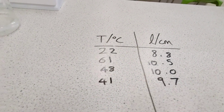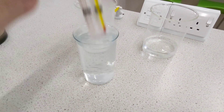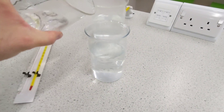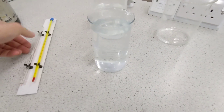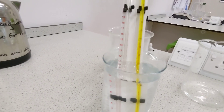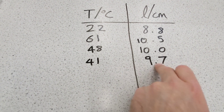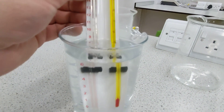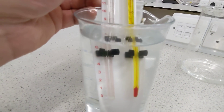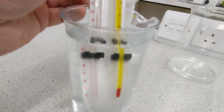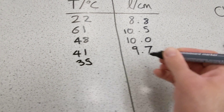I'm going to do this for a few measurements — I won't show all of them. We tip away some water, add more cold water, put the apparatus back in, wait for the thermometer to stop changing, then record the temperature as the independent variable and the length of the column of air as the dependent variable. At 35 degrees Celsius, the column of air is 9.5 centimeters.